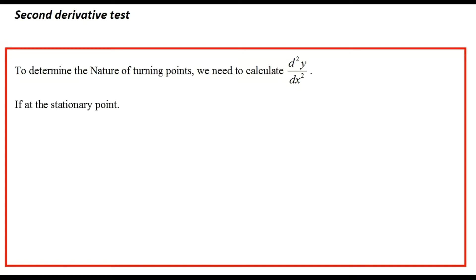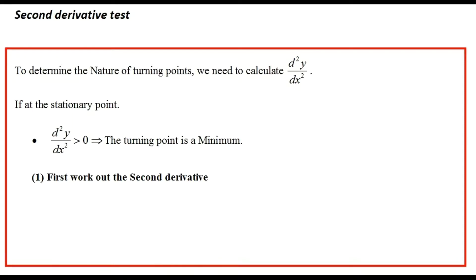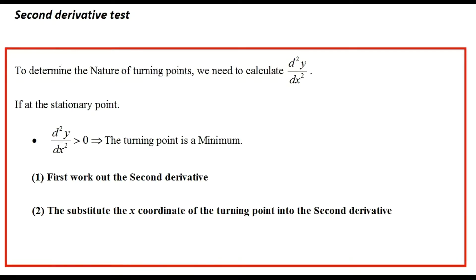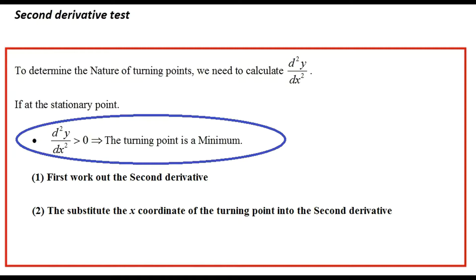If at the stationary point d²y/dx² is greater than zero, your turning point is a minimum. So if you work out d²y/dx² and substitute the x-coordinate of your turning point into it, if the value is bigger than zero, it's a minimum turning point.